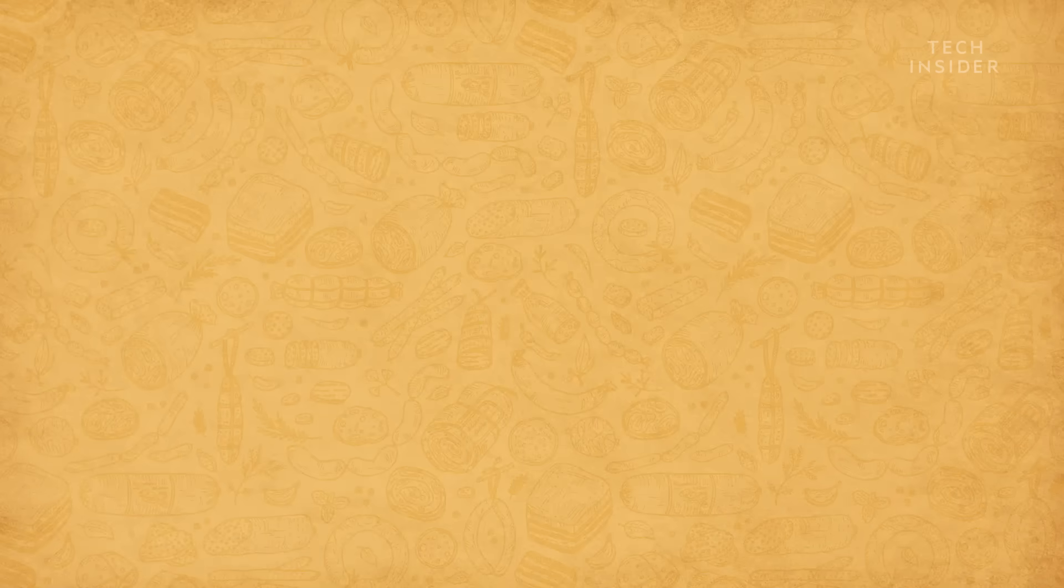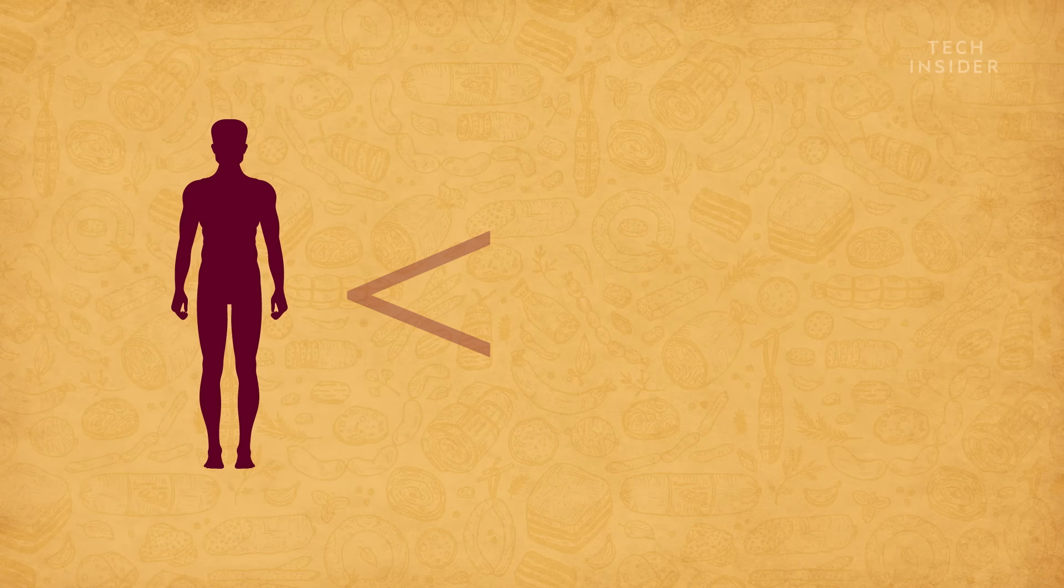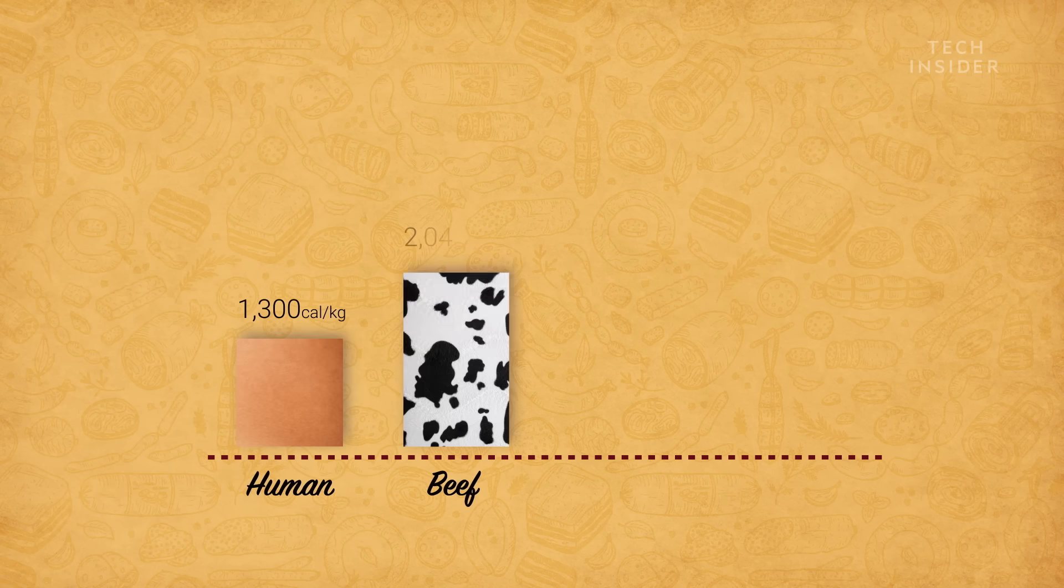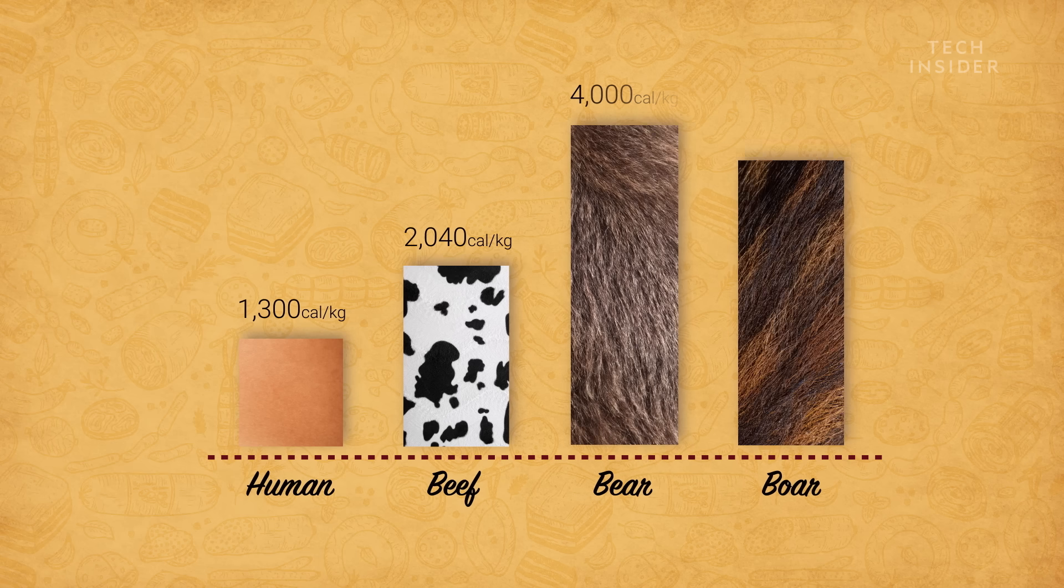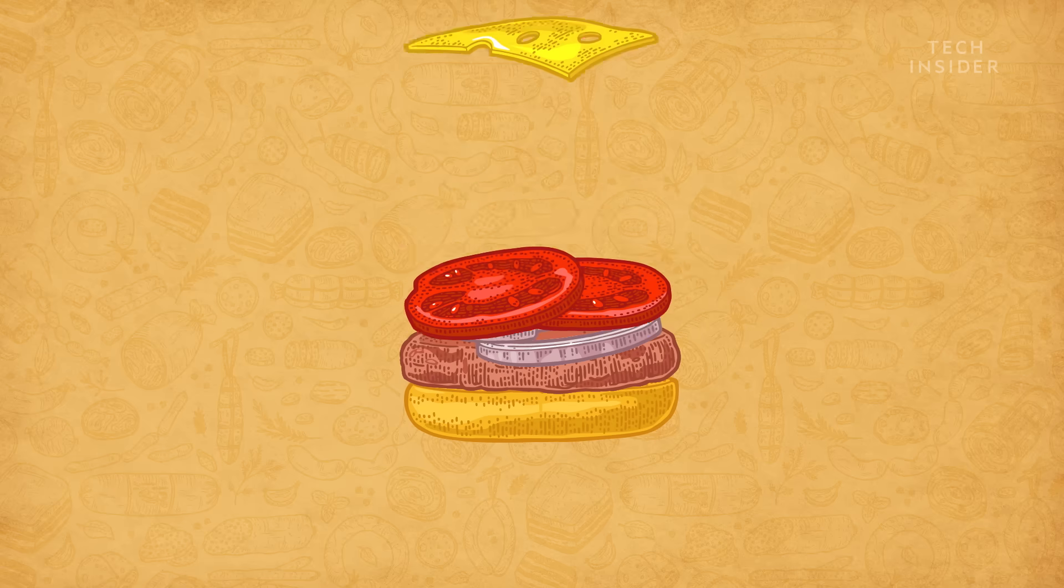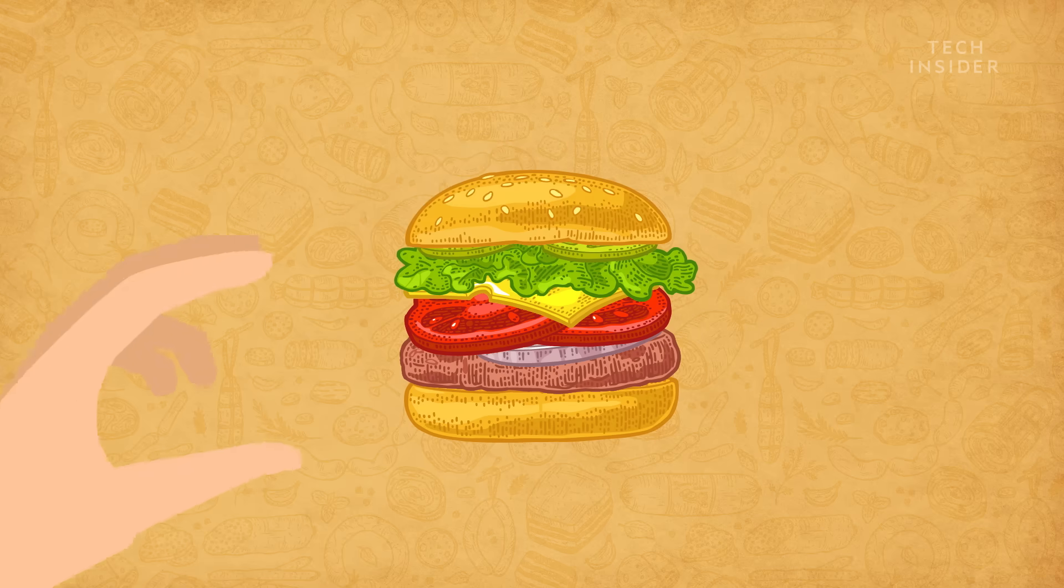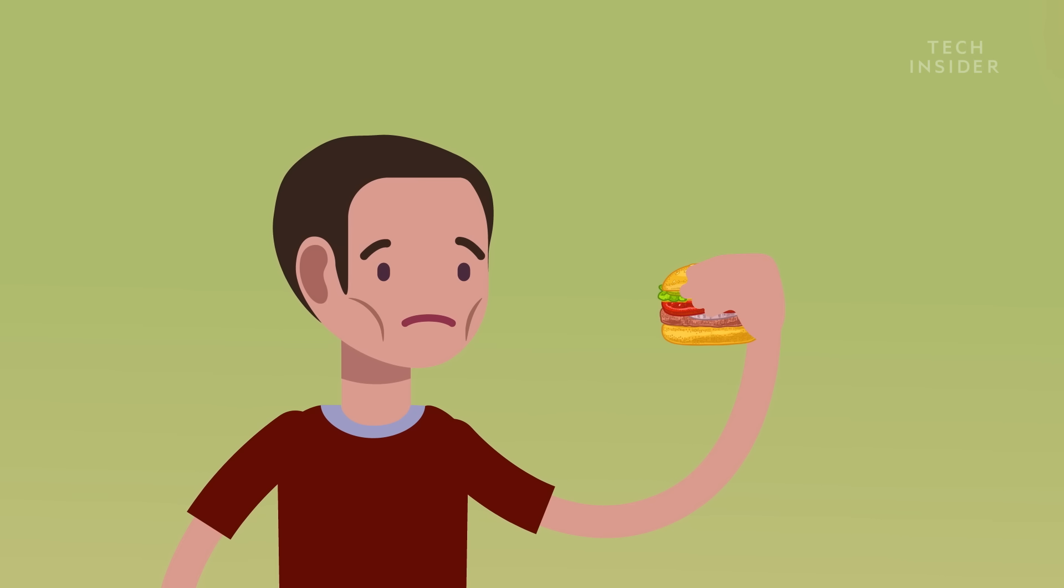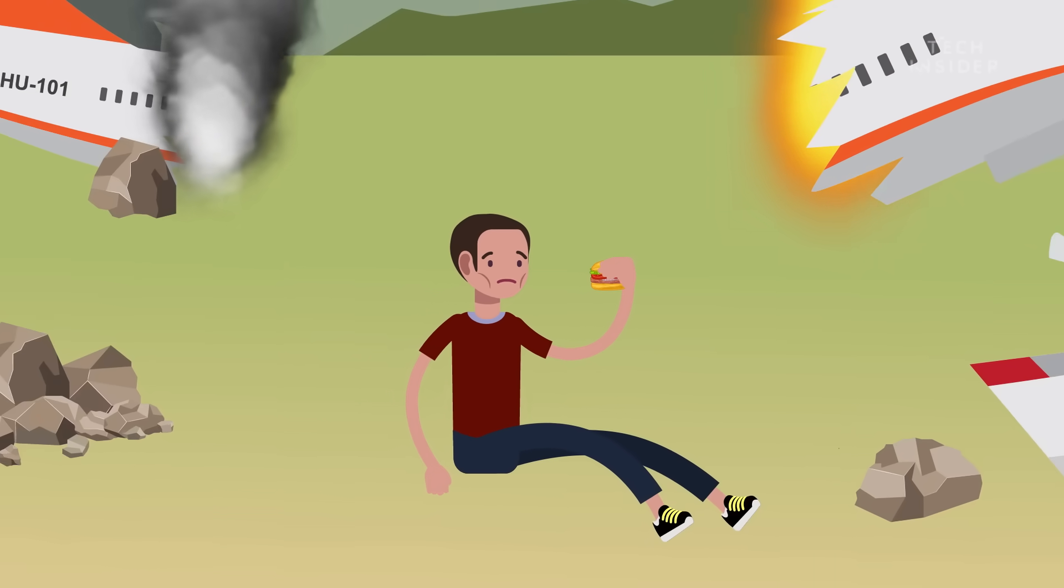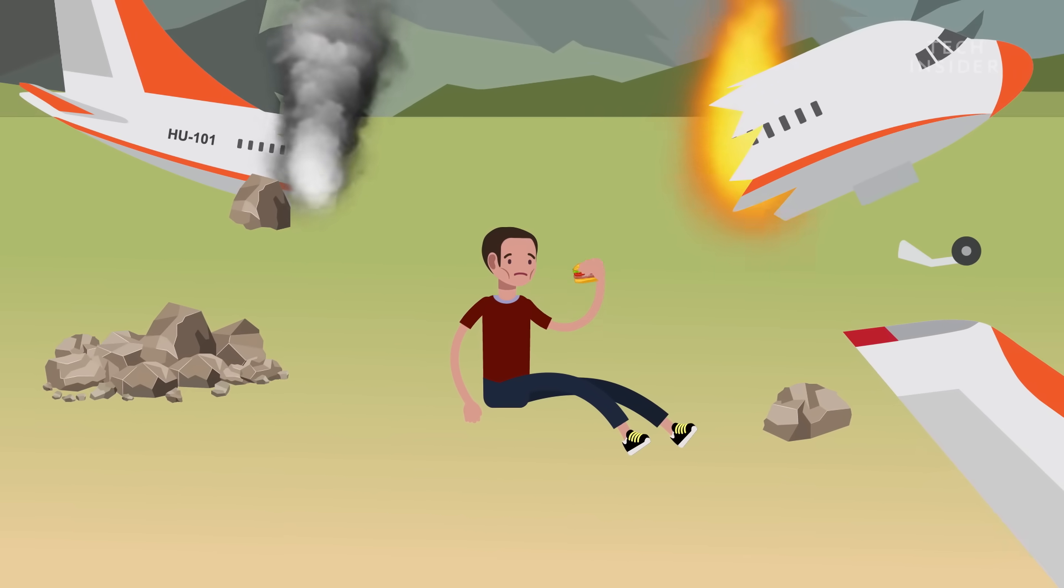For starters, we now know that human meat is a surprisingly low source of calories compared to other red meat. According to one study, human muscle contains about 1300 calories per kilogram. That's less than beef and nothing compared to bear and boar meat. Now, you might think this would actually make human burgers a great low-cal alternative. Until you remember, you're probably trying to eat humans because you're starving to death. So, low-cal is the opposite of what you want.